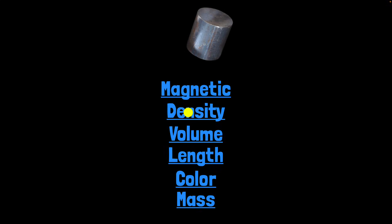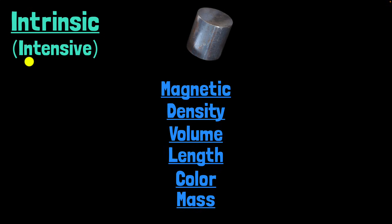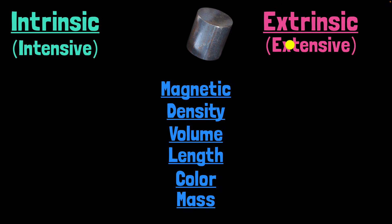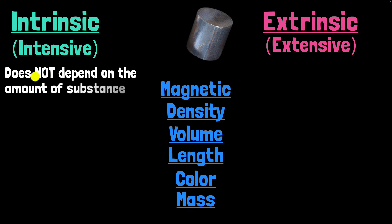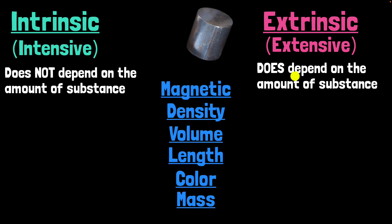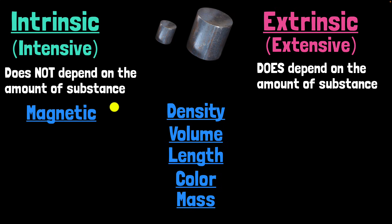There's another way to categorize properties. We can categorize them as intrinsic or intensive properties and extrinsic or extensive properties. Intrinsic or intensive properties are the ones that do not depend on the amount of substance, while extrinsic are the ones that do depend on the amount of substance. For example, think about the property 'magnetic.' Whether iron is magnetic or not does not depend upon how much iron you have — so magnetic is an intensive or intrinsic property. Think about density: the density of iron is the same regardless of how small or big a piece of iron you have. Iron has a density of 7.87 grams per cm³, so density is also intensive.